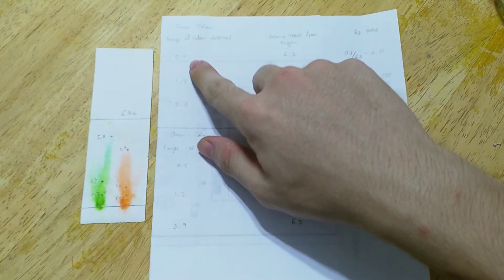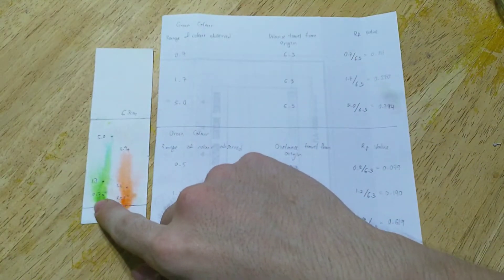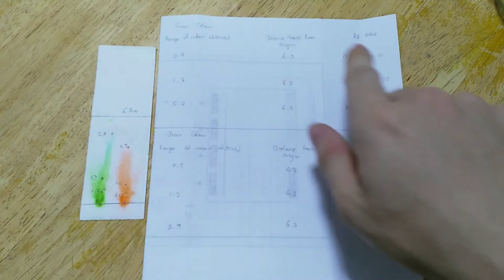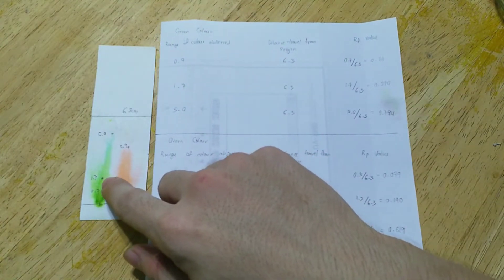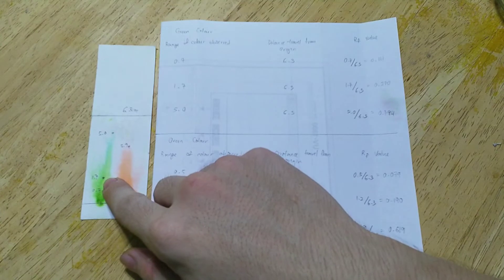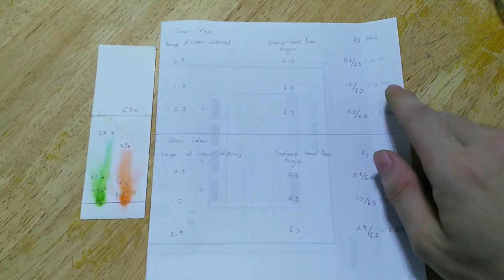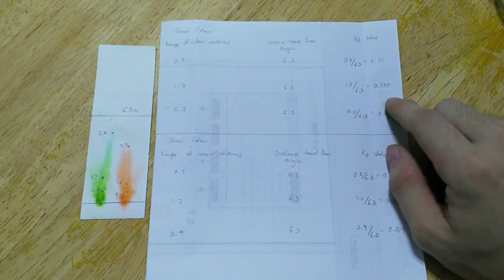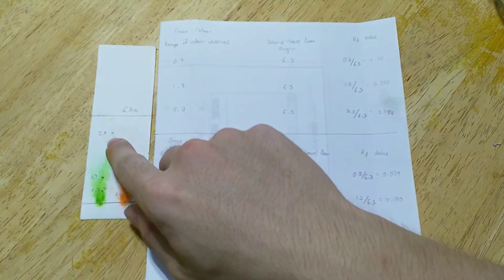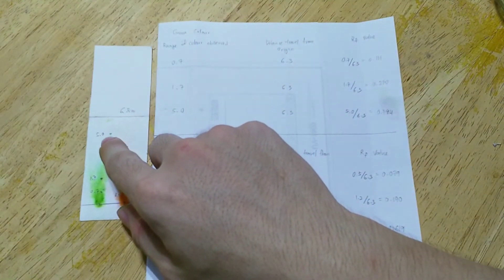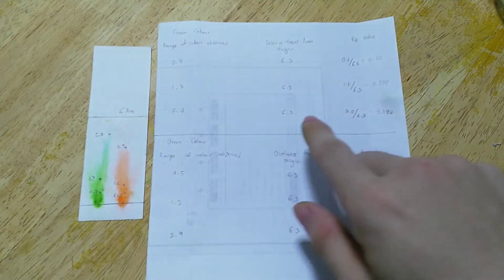And for the first range which from here the green color is 0.7, the RF value is 0.111. And range for the green color 1.7 is the range, the RF value is 0.27. And the third distance for the green color is 5cm and the RF value is 0.794.